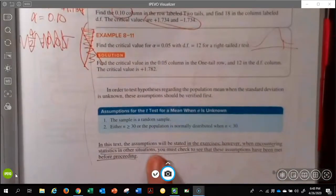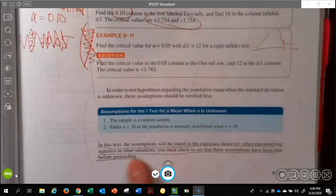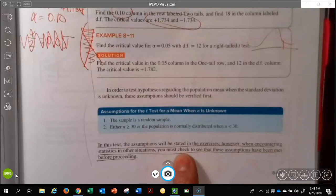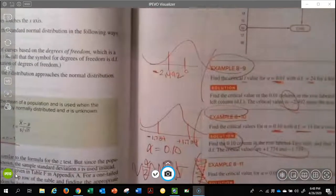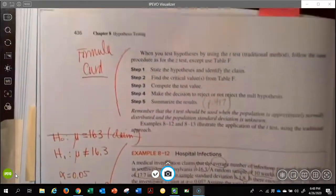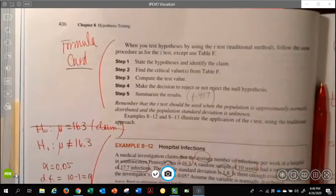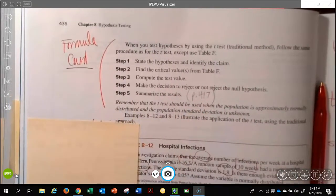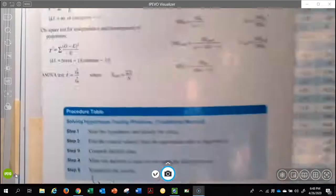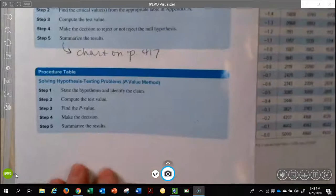A little bit more reading. In this text, the assumptions will be stated in the exercises. However, when encountering statistics in other situations, you must check. And that's what I was meaning is if you go on and do advanced statistics or another course in statistics for your master's, your doctorate, or the bachelor's degree, you have got to check your assumptions. But this is an introductory statistics course. And so we get to just assume and just know they're going to take care of us. And so I've got a lot of stuff going on. I've got some more notes going on down here. But those are going to happen in your video. And so right here, I just want to point out, when you're doing the hypothesis testing, you're going to have the formula card during the test.